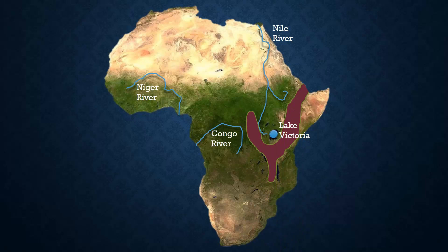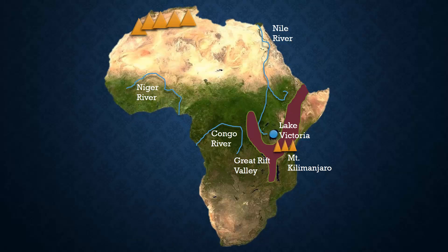The upcoming physical feature is the Great Rift Valley. The Great Rift Valley is located around Lake Victoria. The following physical feature is Mount Kilimanjaro, which is shown by three brown triangles. It is located to the southeast of Lake Victoria. The next physical feature is the Atlas Mountains. They are represented by the brown triangles in the top left corner of Africa.